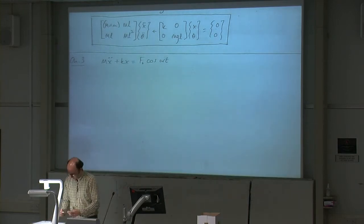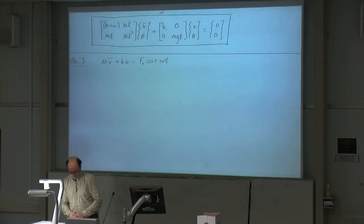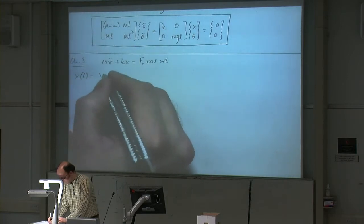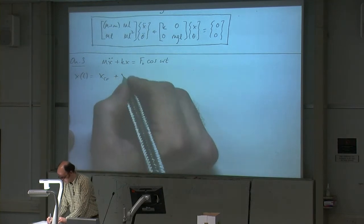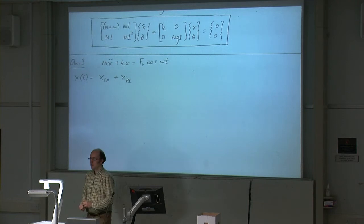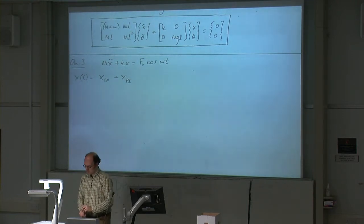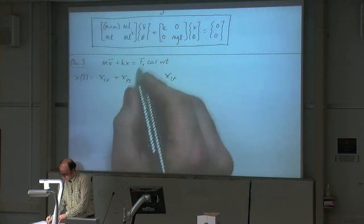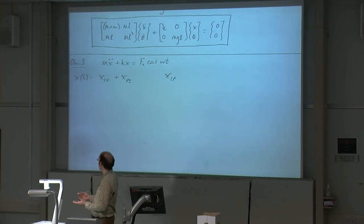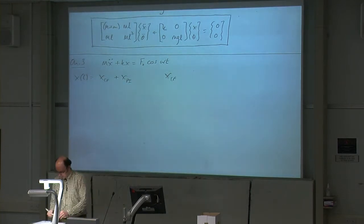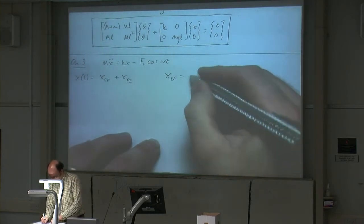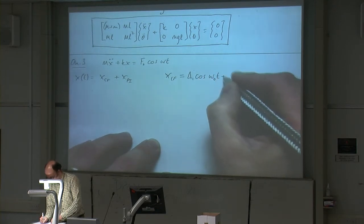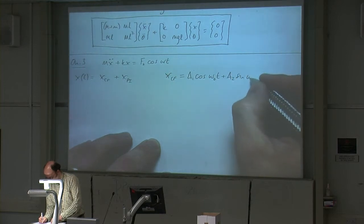Here's my single degree of freedom system. We know that the complete solution x of t is xcf, which is the complementary function, plus xpi, which is the particular integral. The first term, xcf, is always going to be the solution for this system when the force is 0 — it's the homogeneous solution, where you've got m x-double-dot plus kx equals 0. That's on your equation sheet: a1 cosine omega-naught t plus a2 sine omega-naught t.